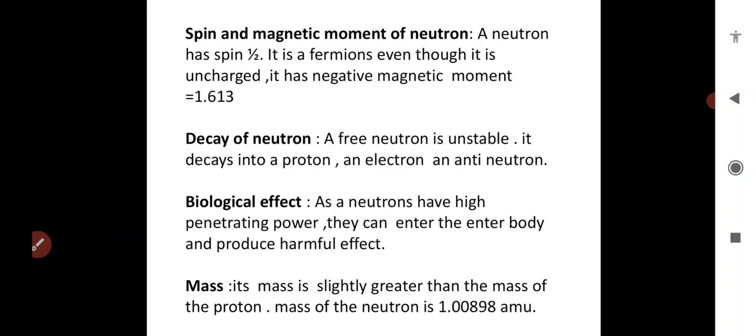The spin and magnetic moment of neutron is plus or minus half. It is a fermion, which means it obeys Pauli's principle with half integral spin. The magnetic moment is 1.613. Decay of neutron undergoes transformation.